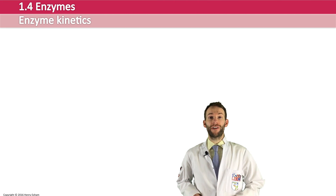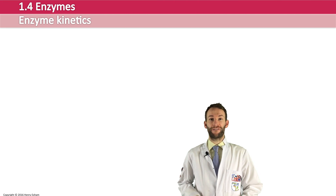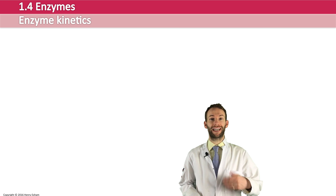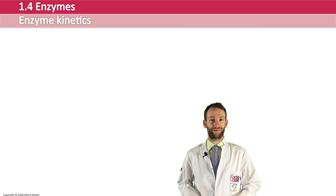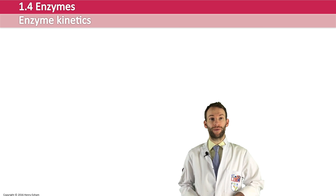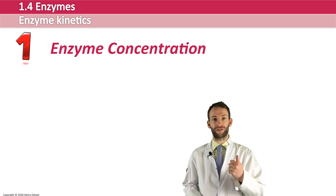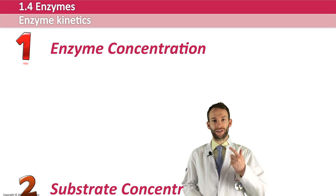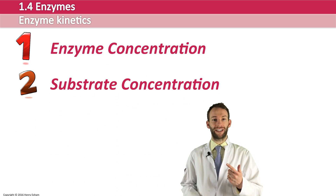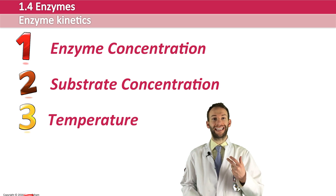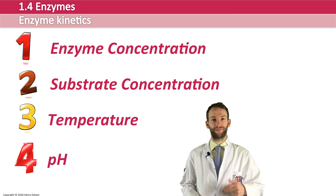Certain variables can affect how fast an enzyme catalyzes a reaction. The four variables we're looking at here are enzyme concentration, substrate concentration, temperature, and pH.